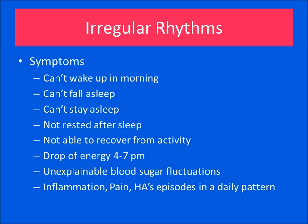When the cortisol or melatonin rhythms are off, problems appear. Here are some of the common symptoms that occur when your rhythm is off, and they are very common in our society today: can't wake up in the morning, can't fall asleep, can't stay asleep, not rested after a night of sleep, not able to recover from activity during the day, a drop of energy between 4 to 7 p.m., unexplainable blood sugar fluctuations, and inflammation, pain, or headaches in a daily pattern.